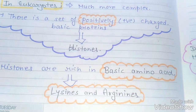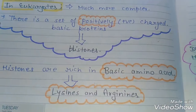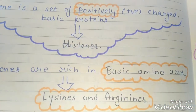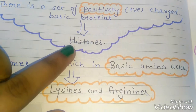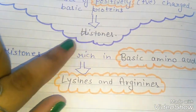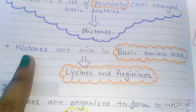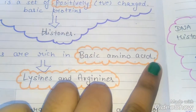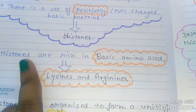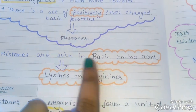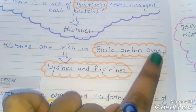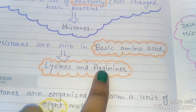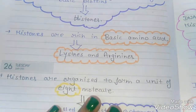There is a set of positively charged basic proteins. These positively charged basic proteins are called histones. Histones are rich in basic amino acids, for example lysine and arginine.